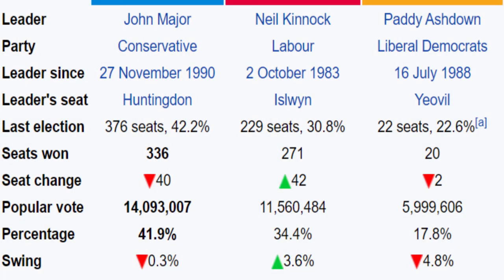The result is that despite the exit poll on election day saying that Labour's going to win, the polls get it badly wrong. The Conservatives win. It's only a majority of 21, which is a little bit unfair to Major, actually, because in terms of the number of people who vote Conservative, this is the best the Conservatives have ever done in terms of that raw number of votes — over 14 million votes for the Conservative Party. So why does the election go as it does?